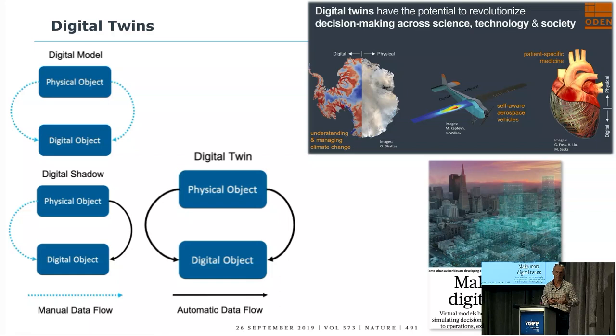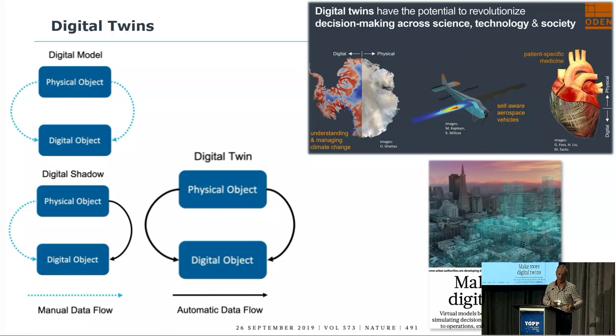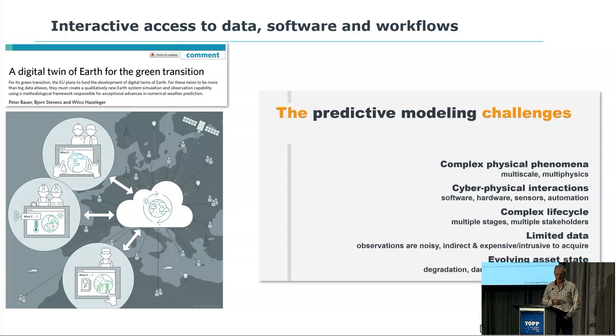Increasingly, these digital twins create momentum in industry — that's where they come from in the first place. We are actually not the first to invent that. They've been used in designing aircrafts, spaceships and operating them. They're also used in factories to optimize production processes, make them fail-safe, reliable, and energy efficient. Increasingly, this template of digital twins is being applied elsewhere and it's very attractive for us.